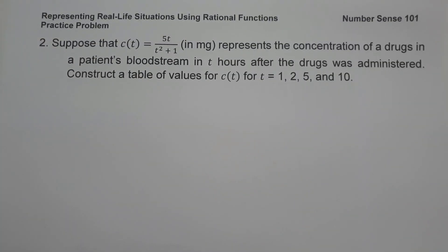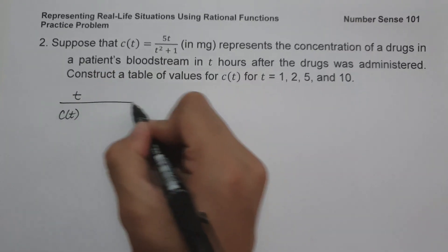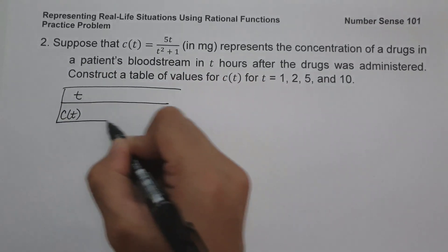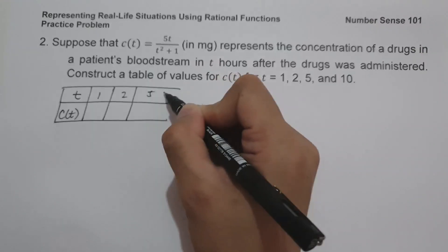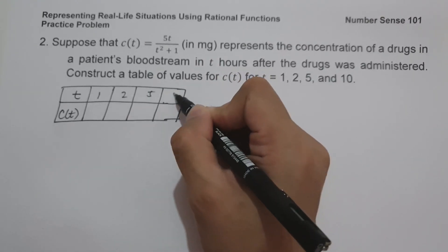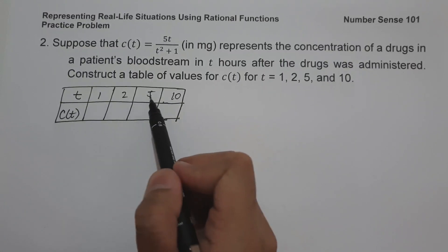On example number 2, suppose that c(t) = 5t / (t² + 1) in milligrams represents the concentration of drugs in a patient's bloodstream t hours after the drug was administered. Construct a table of values for c(t) for t = 1, 2, 5, and 10. Let us construct a table with t values 1, 2, 5, and 10, and find the corresponding c(t) values.